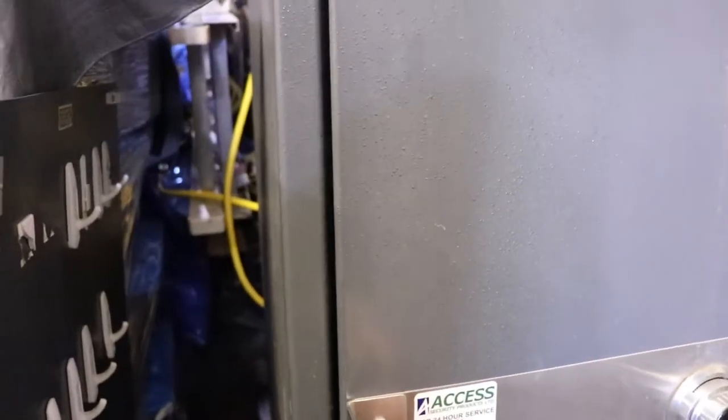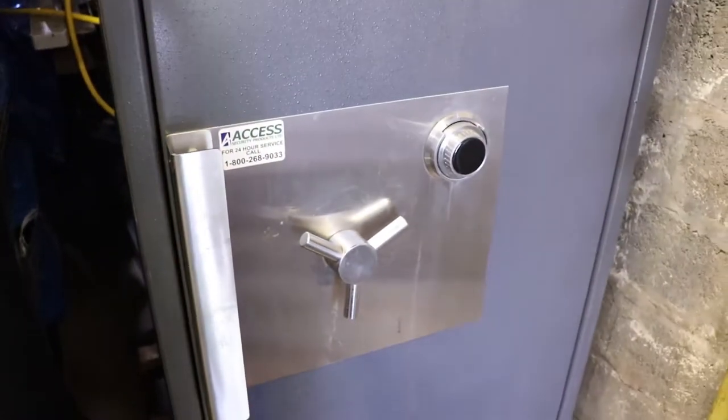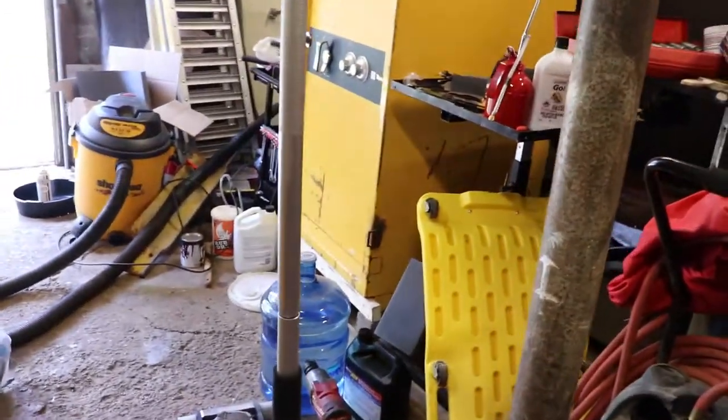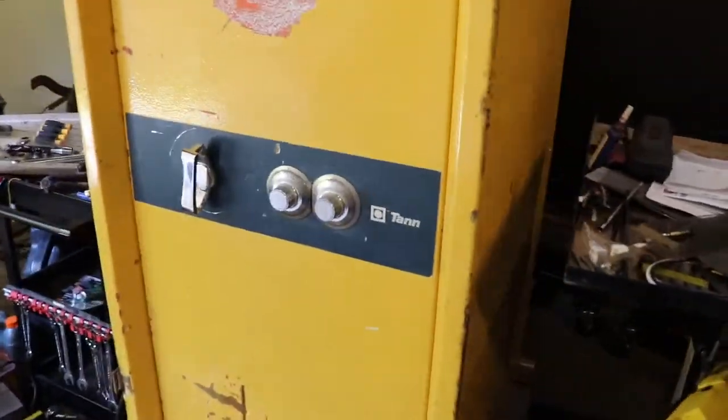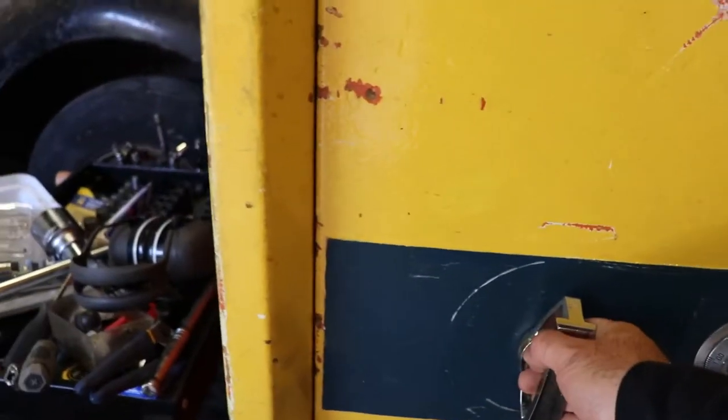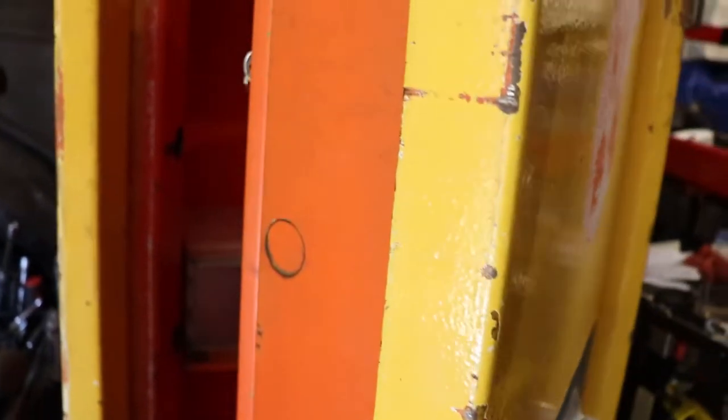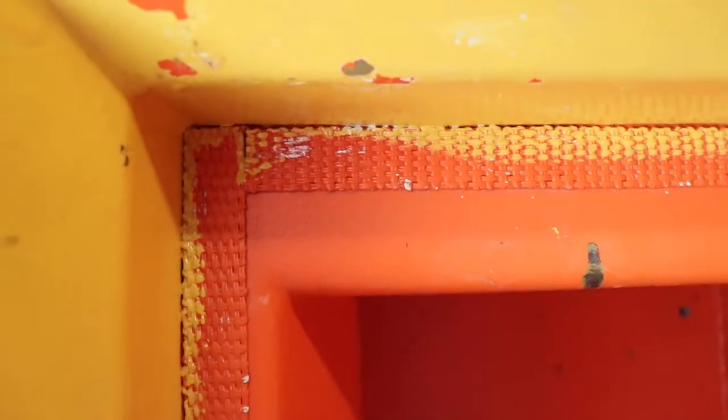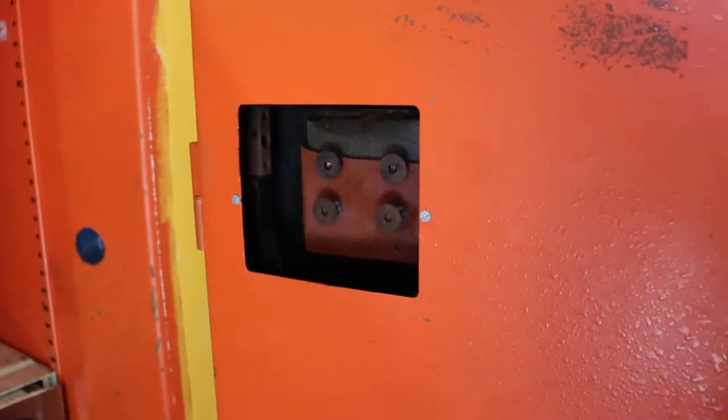So I mentioned this before in the other video that this came out of a jewelry store. Now we have another one that came out of a credit union here. This one's like the real deal here. It's got dual custody with the two dials. It's got an expanding strip on it so if it was in a fire it would seal itself up. It has a time lock provision.